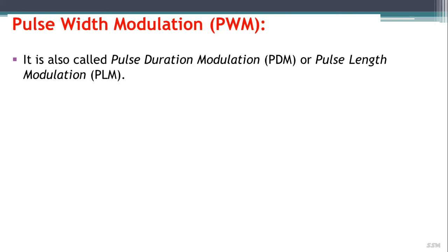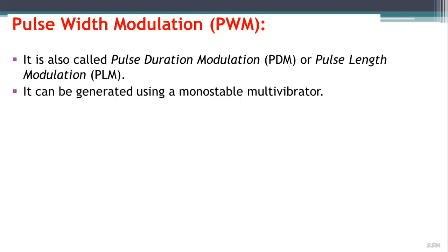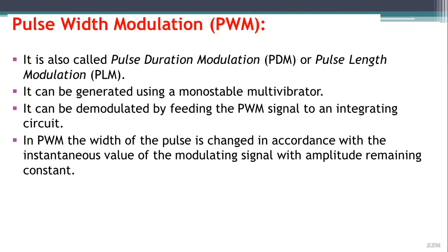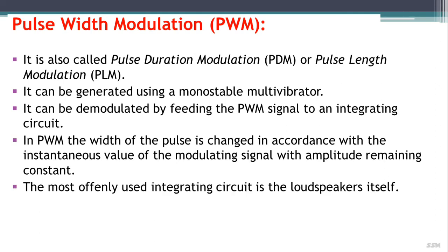Pulse width modulation, PWM, is also called pulse duration modulation (PDM) or pulse length modulation (PLM). It can be generated using a monostable multivibrator and demodulated by feeding the PWM signal to an integrating circuit. In PWM, the width of the pulse is changed in accordance with the instantaneous values of the modulating signal while the amplitude remains constant.